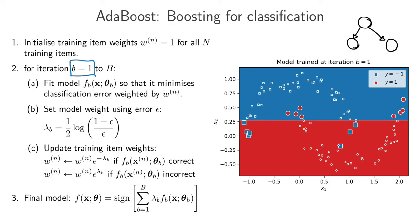In this case, the decision tree with a single split asks: is x2 less than or equal to about 0.26? If true, we're in the bottom region and we assign y equal to 1. If false, we're in the top region and we assign y equal to minus 1. This is the output of model f1(x, θ1), where θ1 summarizes the tree structure. We're done with step A.